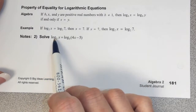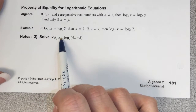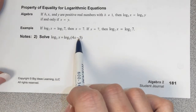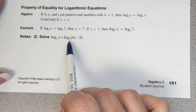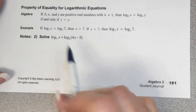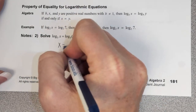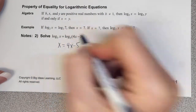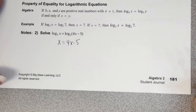Looking at logarithms now. For an equation like log base 3 of x equals log base 3 of 4x minus 5, we check: the logs have the same base, so we can just set x equal to 4x minus 5 and solve.